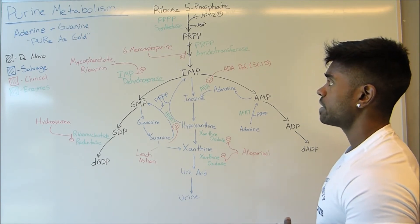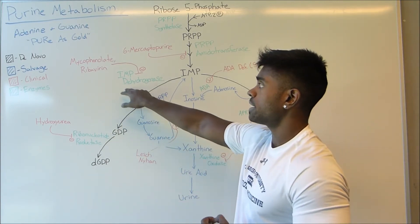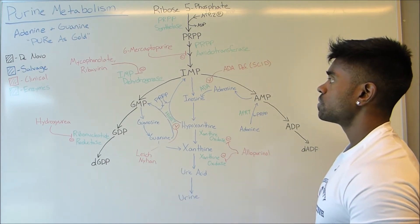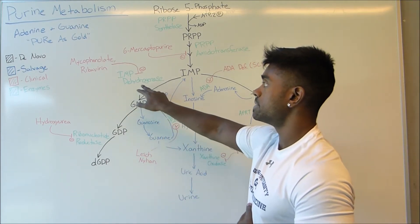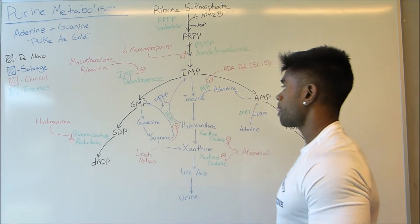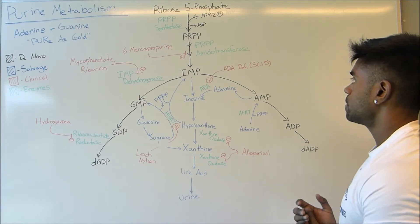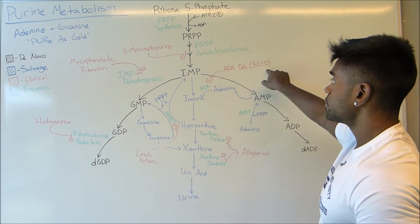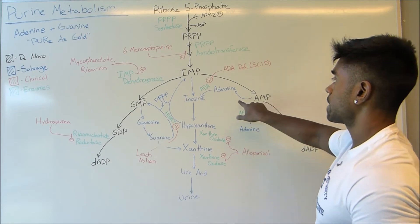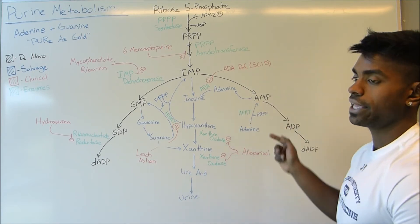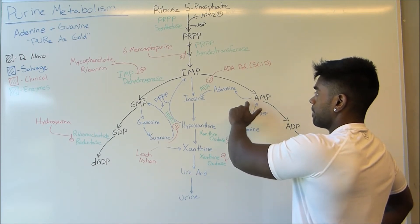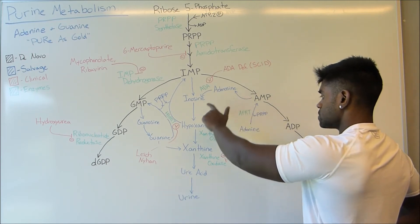The next drugs are mycophenolate and ribavirin. Both of these molecules are actually going to inhibit IMP dehydrogenase directly, so that you're not going to be able to produce dGDP. Then, ADA deficiency — what we're going to have is we're not able to break down AMP so it cannot be released.